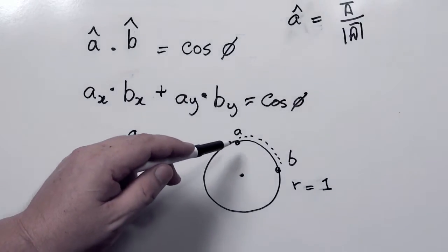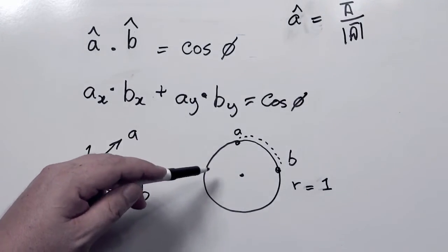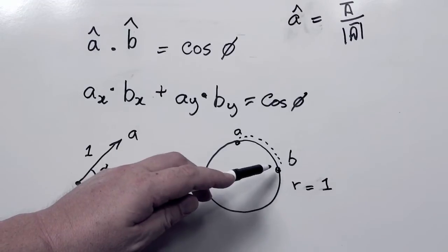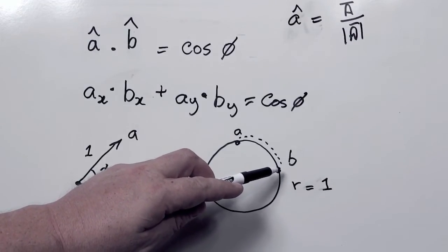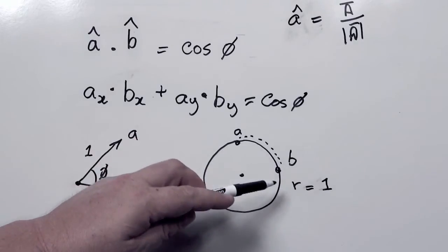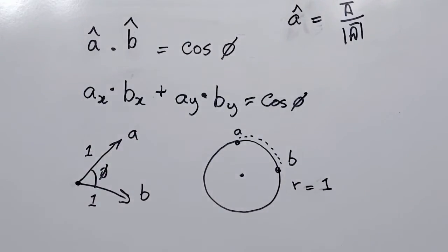Another way of thinking about this is that we have a circle with a radius of 1 and two points on the circle. What we're doing is measuring the distance in radians around that circle, and that's essentially our angle.